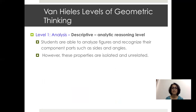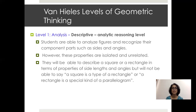Level one is called analysis — the descriptive analytical reasoning level. Students can now analyze figures and recognize their component parts. Given a square, they can identify the angles, corners, and sides. However, these properties remain isolated and unrelated. They may describe a square or rectangle in terms of side lengths and angles, but cannot say that a square is a special type of rectangle, or that a rectangle is a special kind of parallelogram. Inclusion properties between shapes are not yet possible at this stage.